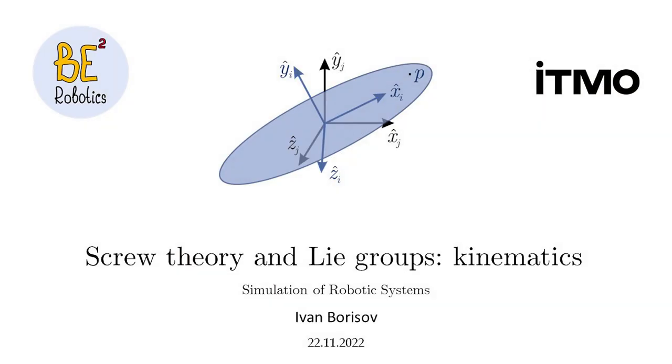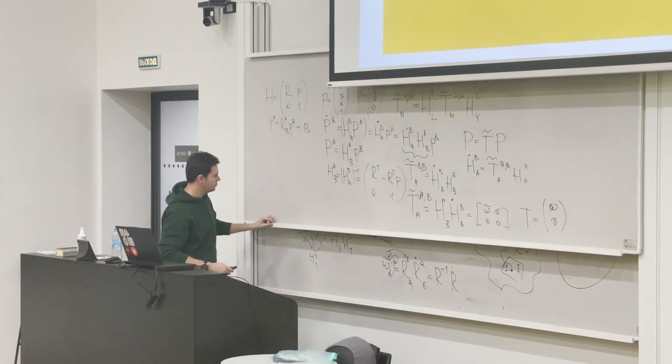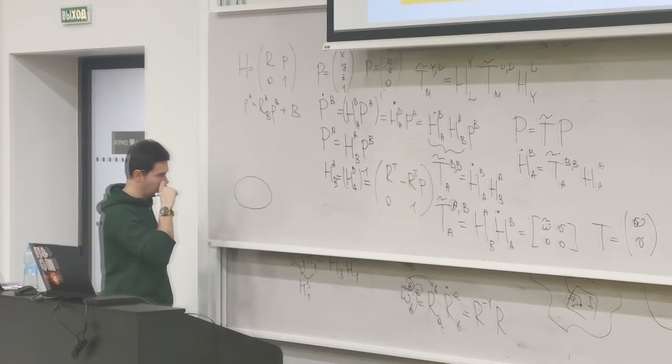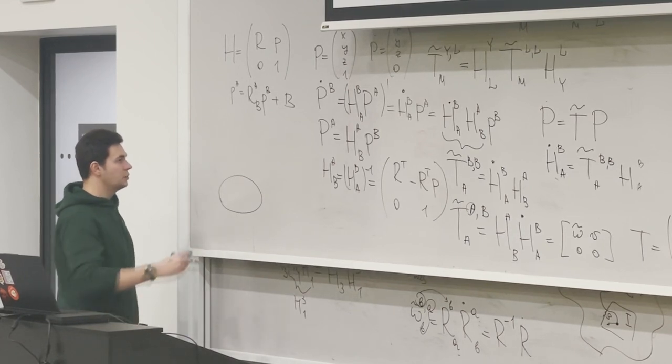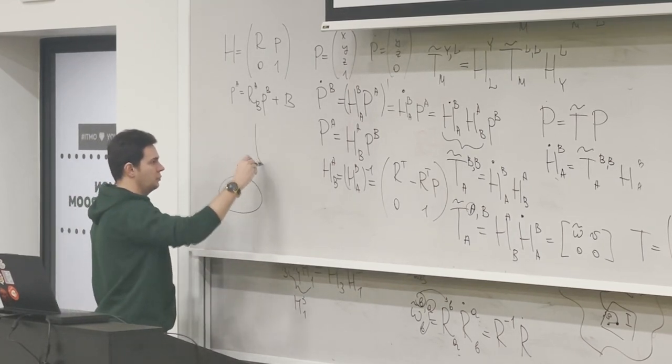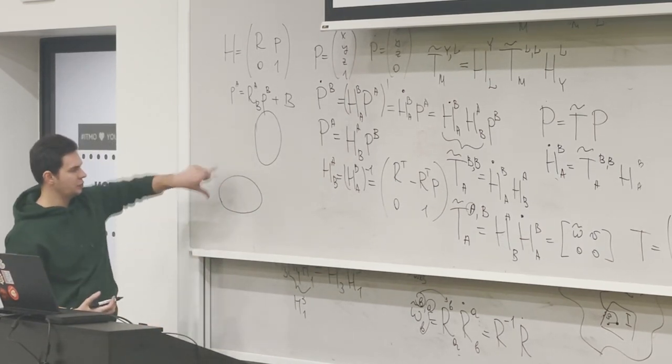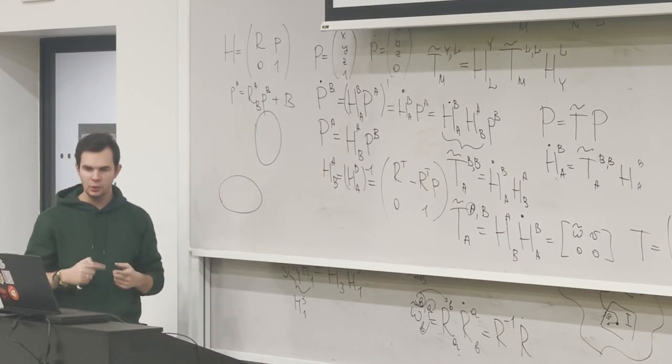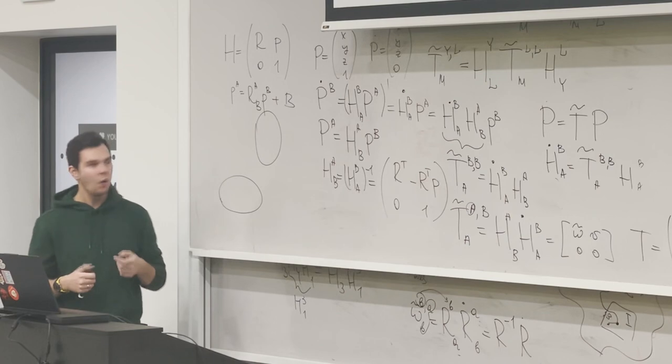Okay, why is it called screw theory? Let me do another picture. So we have a body like this, and we want to go here. We can represent this motion like rotation and translation. It's one way to go. It's like first of all we do one operation of rotation, for example, or translation, and then another kind.